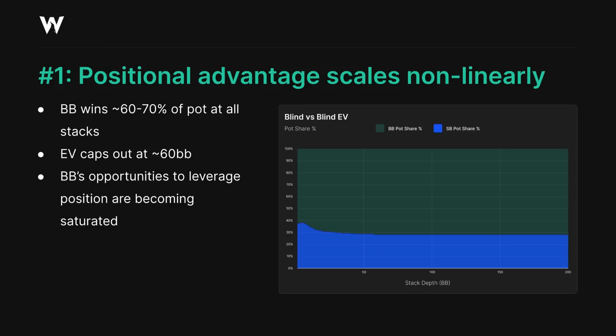Just because they're, say, 200 big blinds deep doesn't mean they can just force the small blind off a massive portion of their equity. The small blind still gets to have strong hands sometimes, and those strong hands can't be made to fold just because stacks are deep. This is especially true in limped pots, where the big blind will usually have a weaker range than the small blind, and is therefore often going to struggle to take aggressive lines at a high frequency on many board textures.